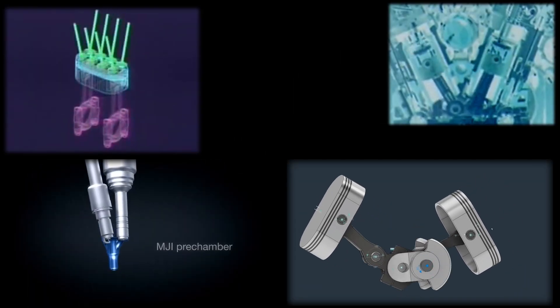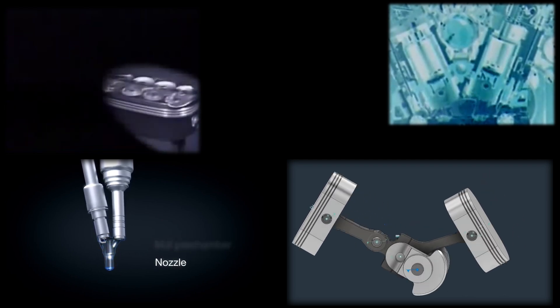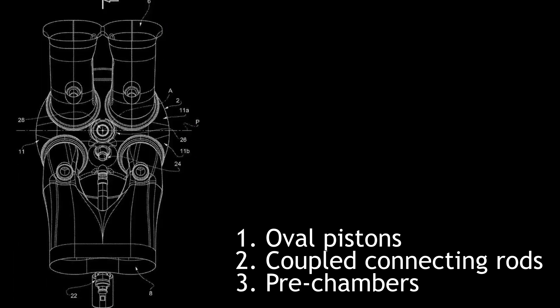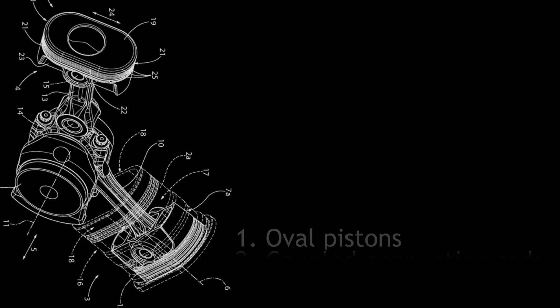The Ferrari patent reveals three innovations planned to be combined into a single V12 engine: oval pistons, coupled connecting rods, and pre-chambers. Let's start with the oval pistons.